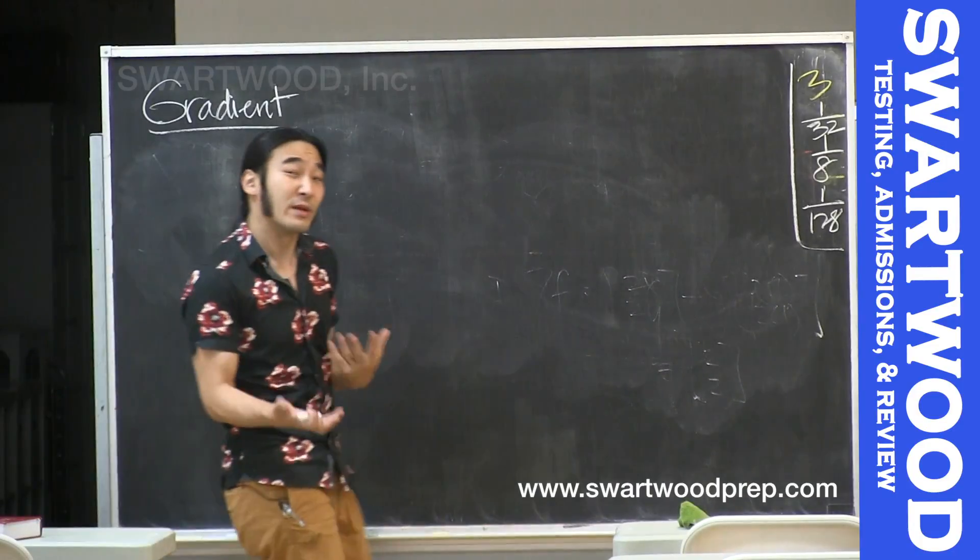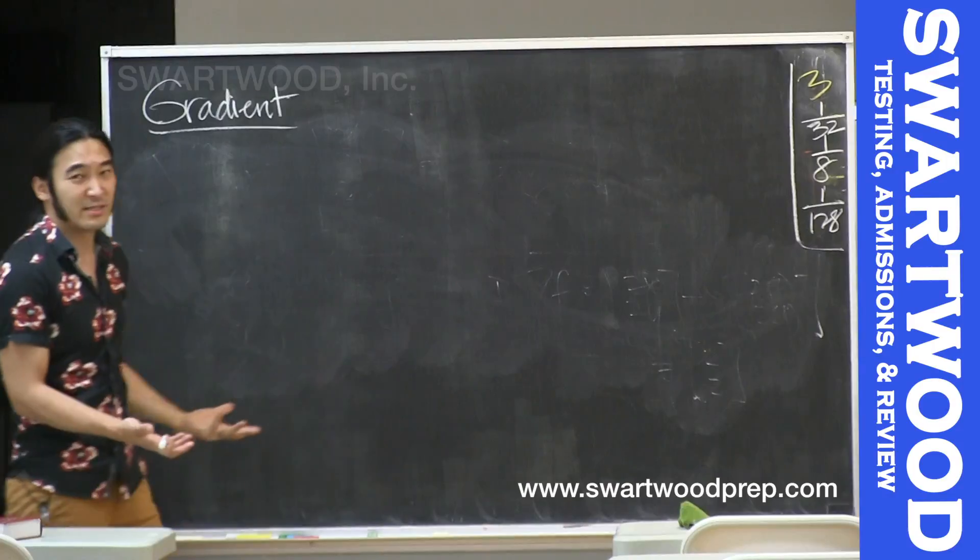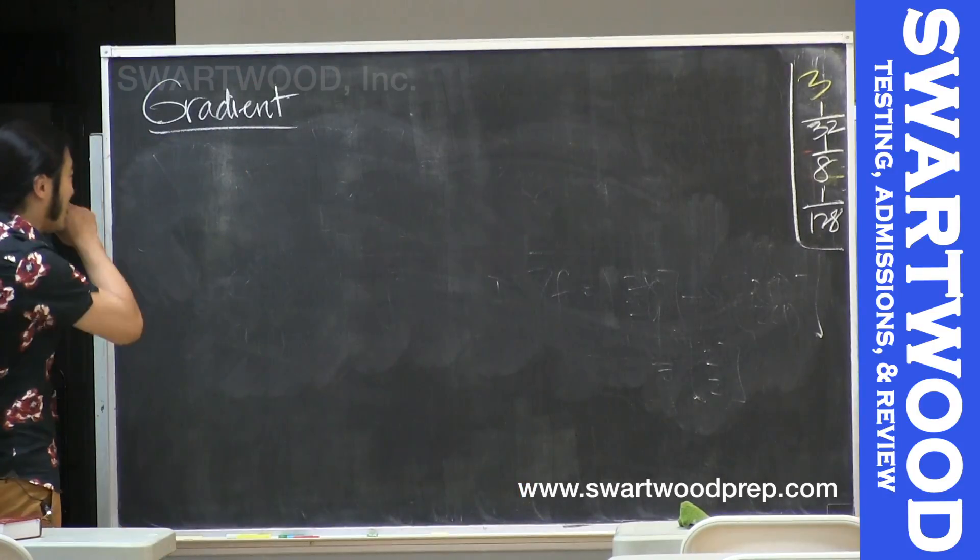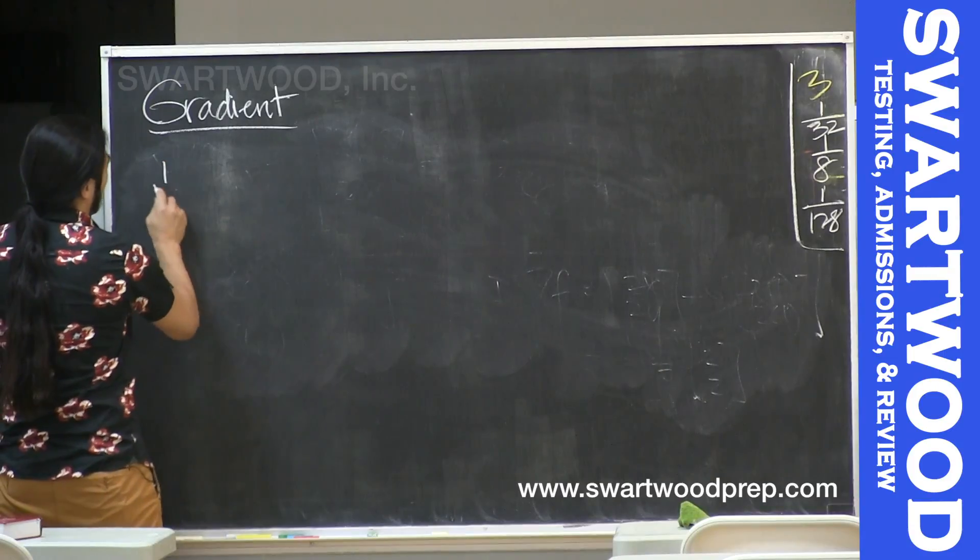You can naturally extend this to, say, 3 inputs, like x, y, z. Basically the same thing: partial with respect to the first guy, partial with respect to the second guy, and partial with respect to the third guy. But now, let's talk about some properties of the gradient.